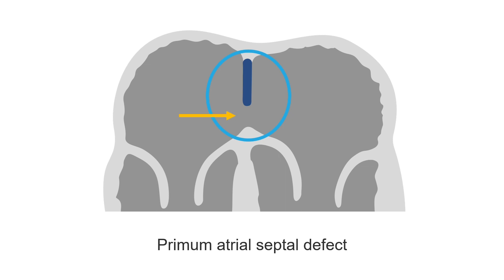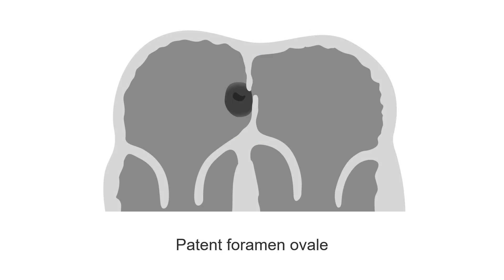This leaves a gap in the lower interatrial septum, and the blood flow moves from the left atrium to the right atrium. Lastly, a patent foramen ovale, or PFO — remember, the foramen ovale is a normal structure in the fetal heart and it is essential to fetal circulation. However, if the foramen ovale does not close fully after birth, it may allow blood to flow from the right atrium into the left atrium when the right atrial pressures exceed the left.